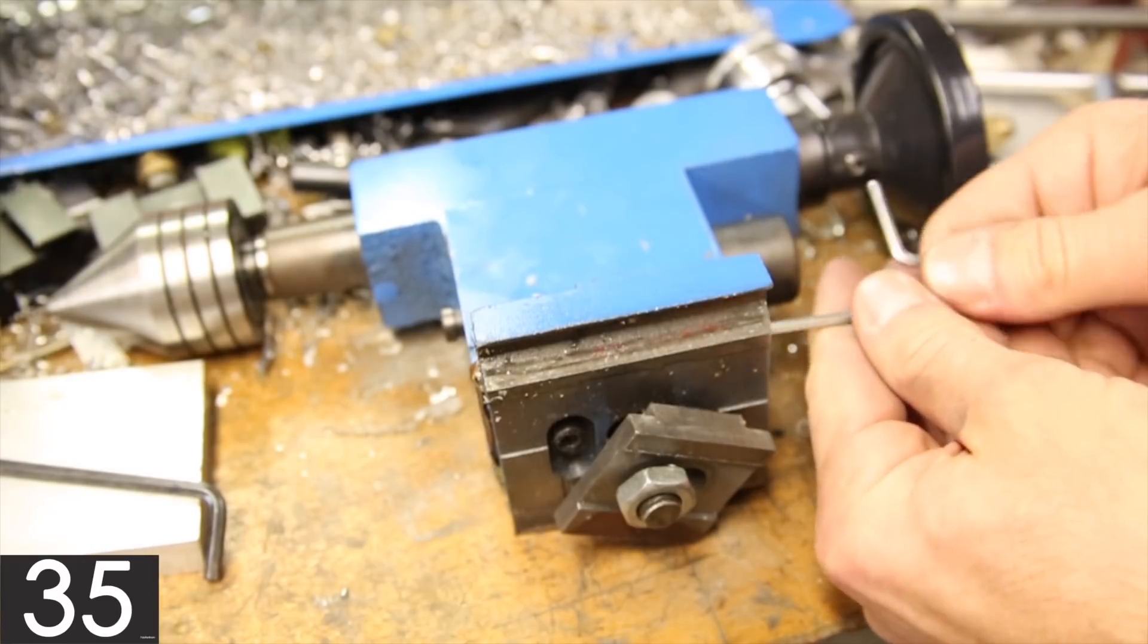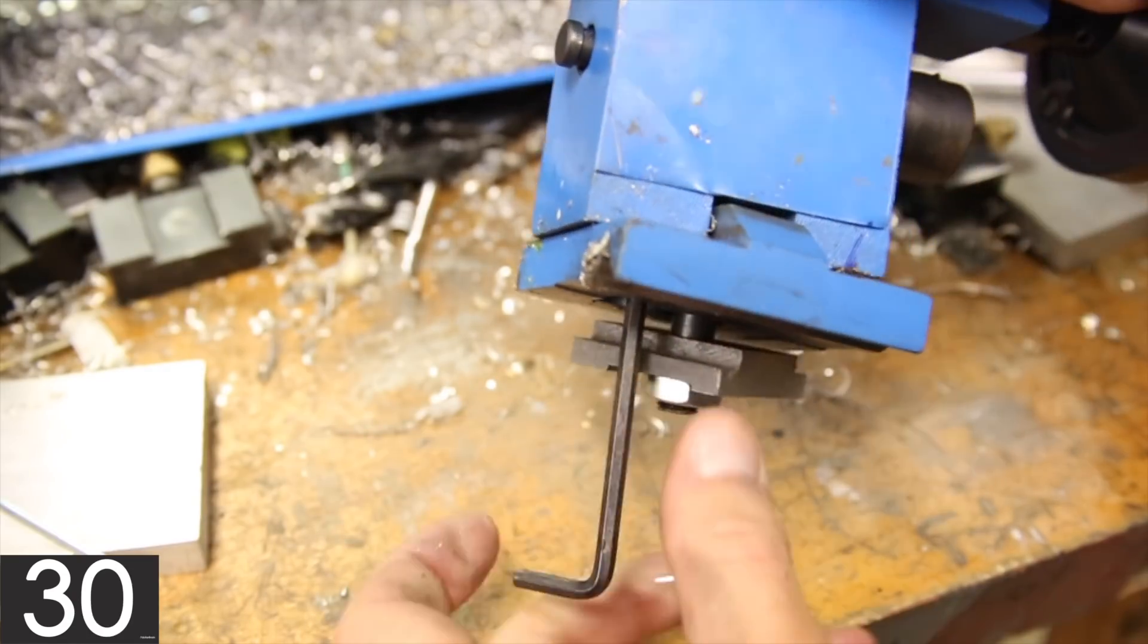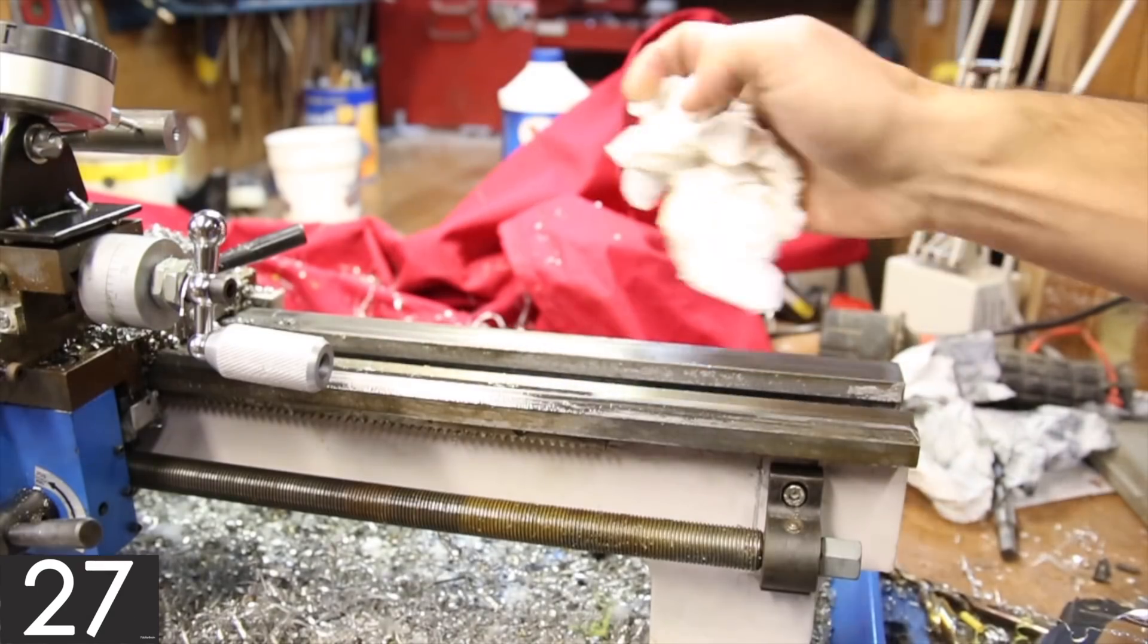the first thing I did was mark a reference line with a marker on the back. Then I loosened the two screws that adjust the twist of the tailstock and finally the screw on the bottom that holds the pieces firmly in place.